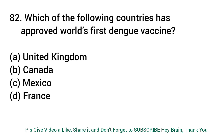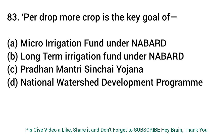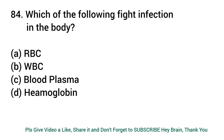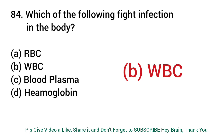Which of the following countries has approved the world's first Dengue vaccine? Answer: Mexico. Per drop more crop is the key goal of? Answer: Micro Irrigation Fund under NABARD. Which of the following fights infection in the body? Answer: WBC (White Blood Cells).